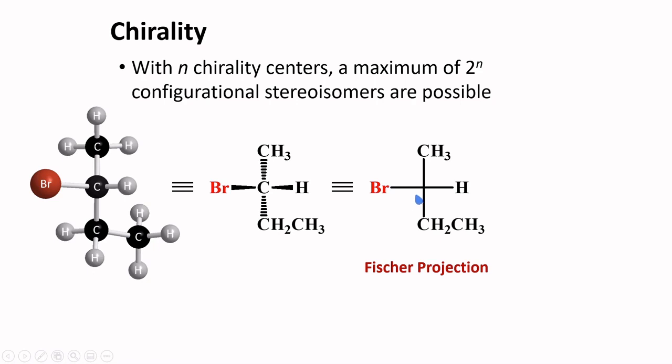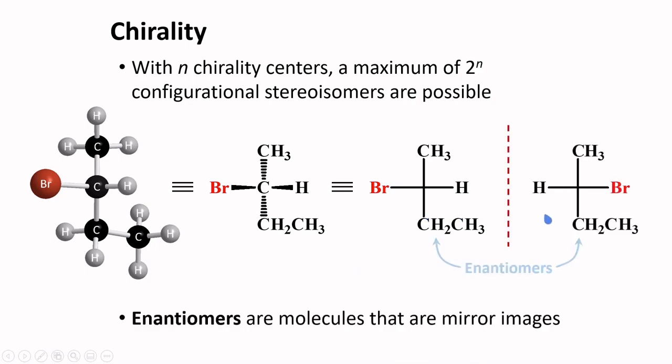Thus, the horizontal line represents bonds to atoms oriented close to the viewer, and vertical lines representing bonds to atoms oriented far away from the viewer. By this Fischer projection, you can easily make a mirror image, and this compound and its mirror image are called enantiomers. Enantiomers are molecules that are mirror images.